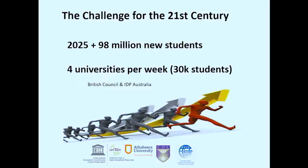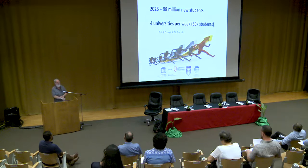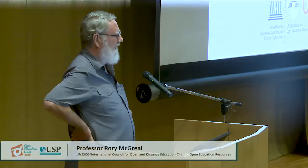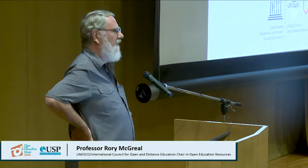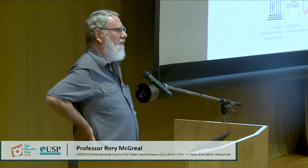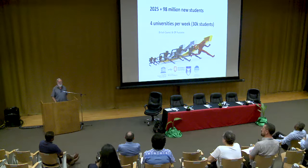McGreal identifies the challenge of the 21st century for educators: by 2025, about 100 million new students capable of university education will not be able to get it unless we address this problem. Back in 2015, it was estimated we would have to build four new universities every week of 30,000 students to meet demand — and we know that is impossible.